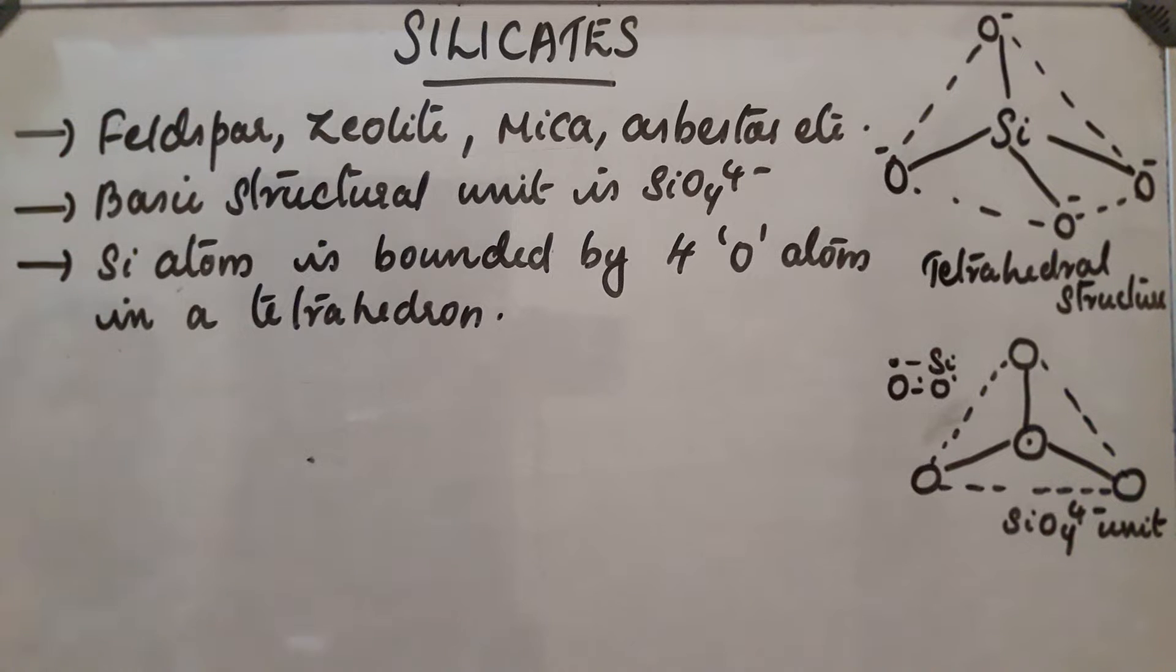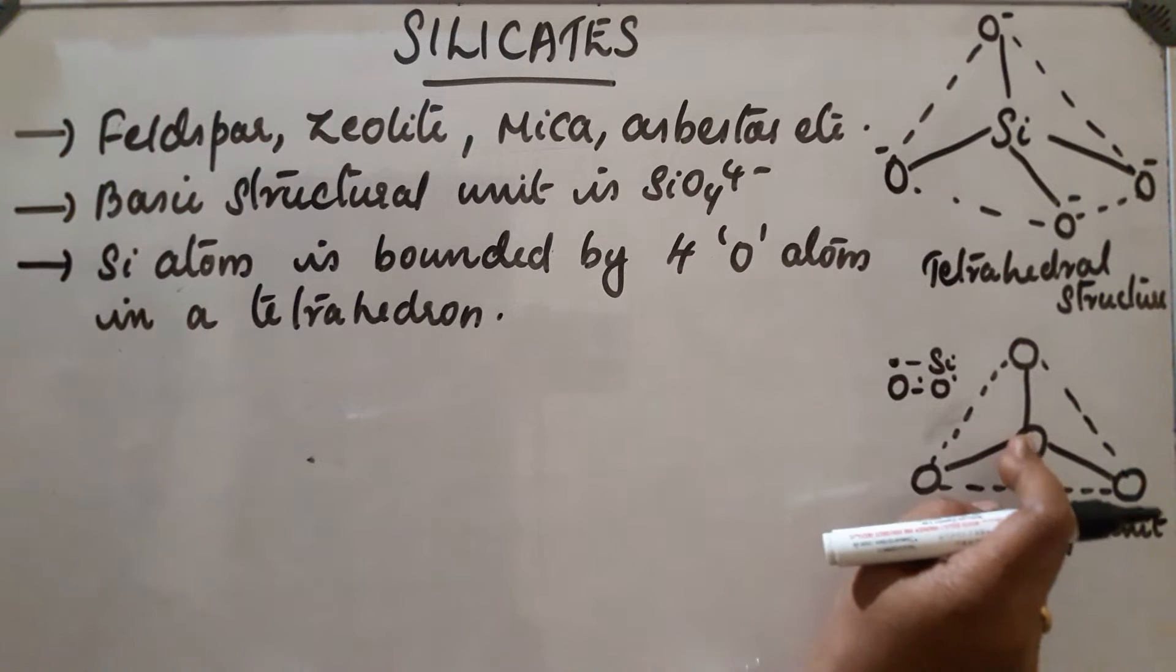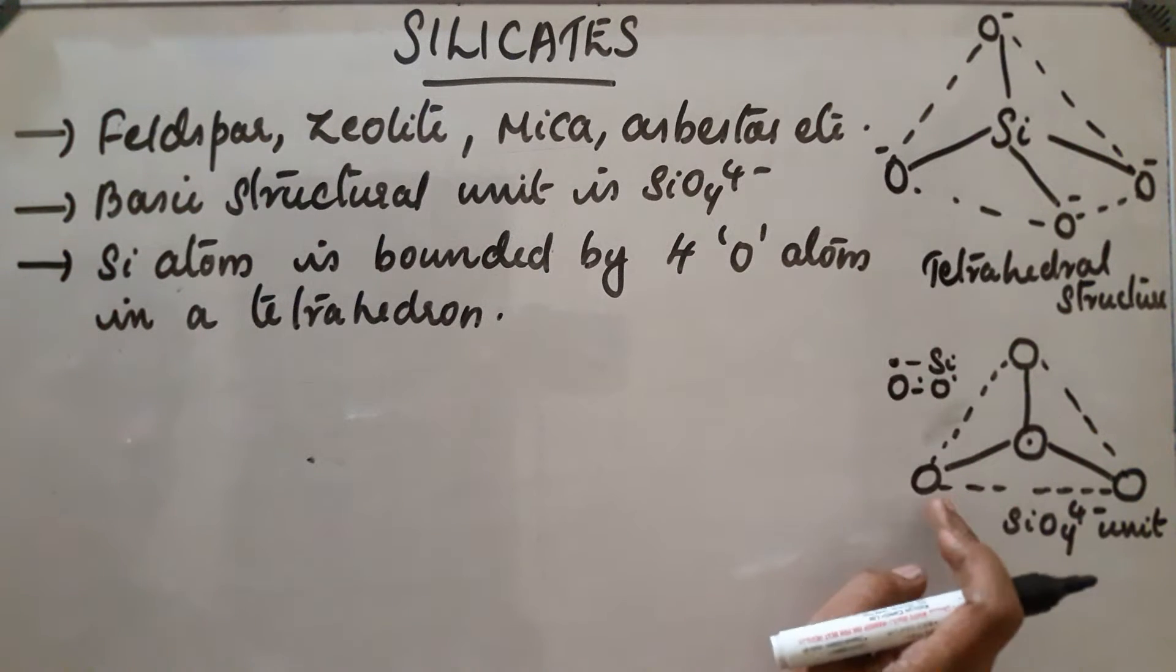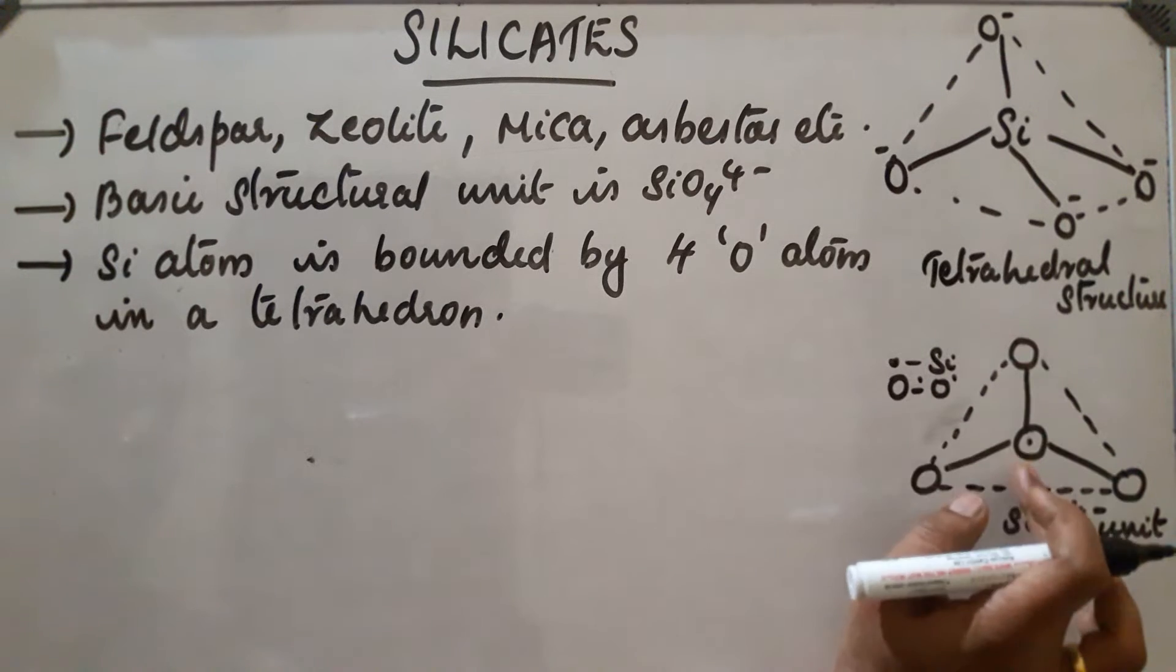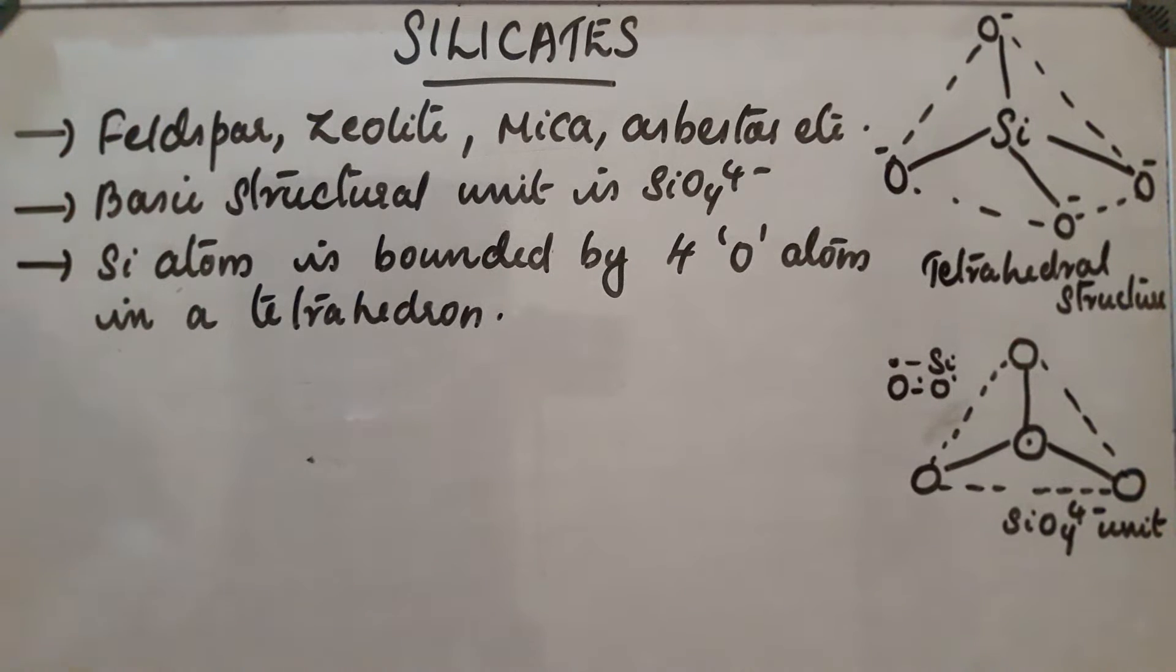This is the basic unit SiO4 4-. Each unit present in silicate is SiO4 4-. And this is the representation of each unit in which dot represents the silicon atom and this round represents the oxygen atom.